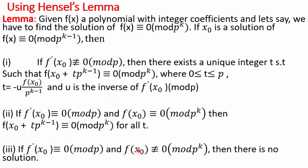Now, coming to Hensel's Lemma — what does it state and how do we use it? The lemma states: given f(x), a polynomial with integer coefficients, if we need to find the solution of f(x) ≡ 0 mod p^k, and x₀ is a solution of f(x) ≡ 0 mod p^(k-1), then three cases arise. First, we check the derivative of our polynomial. If f'(x₀) ≢ 0 mod p, then there exists a unique t such that x₀ + t·p^(k-1) ≡ 0 mod p^k, and t lies between 0 and p.